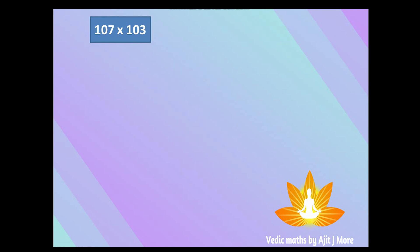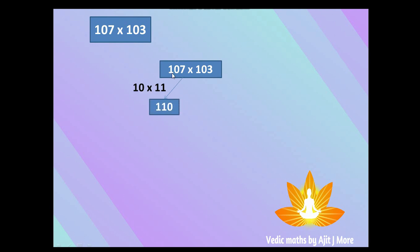One more example: multiplying 107 × 103. Does it satisfy the criteria? Yes — addition of unit digits is 10 and the remaining digits in both numbers are the same. Now what will be the first part? What comes before the unit place? That is 10. And what is one more than 10? That is 11. So 10 × 11 = 110.